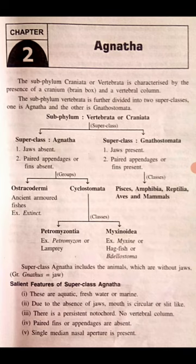Super class Agnatha is further divided into two groups: Ostracodermi and Cyclostomata. Ostracodermi were the earliest fishes on the planet. The group Cyclostomata contains two classes: Petromyzontia and Myxenoidia.